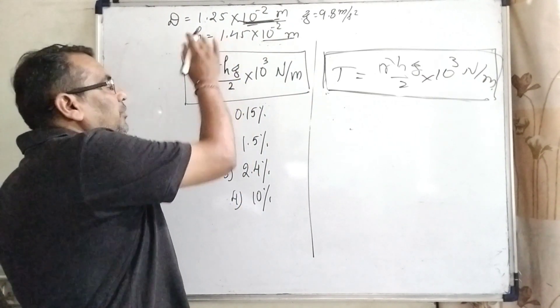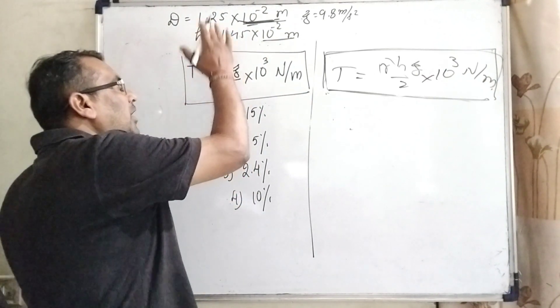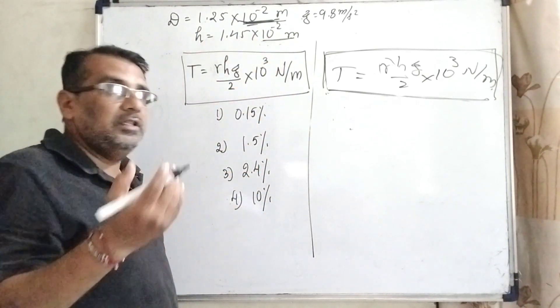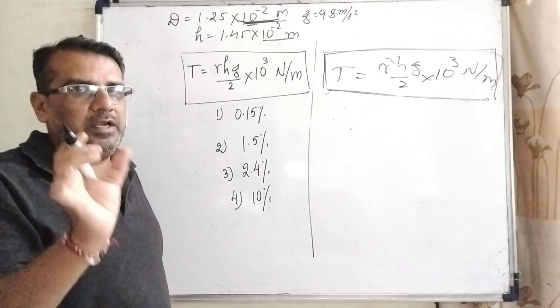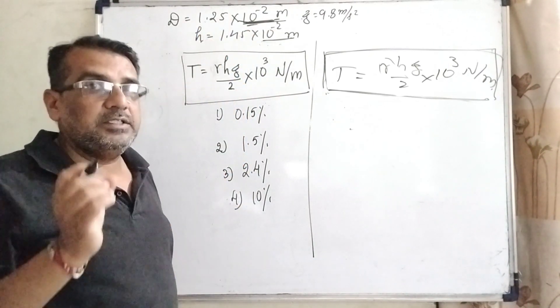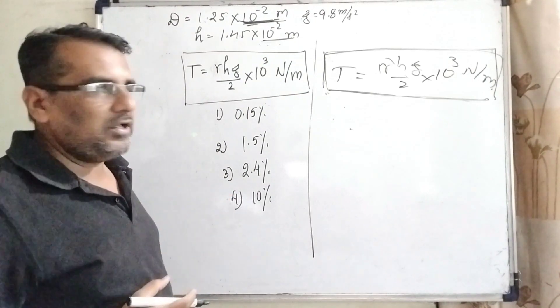Similarly, H equal to, the height of the capillary is given 1.45 into 10 raised to power minus 2 meter. This value given in the form of 10 raised to power, that is the minimum value we can measure. Therefore, this is the error. So it is the concept behind it. And now we can solve it.